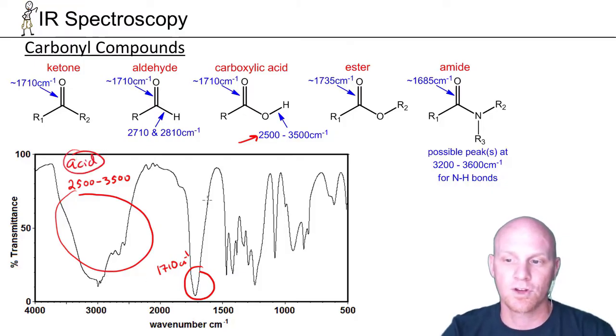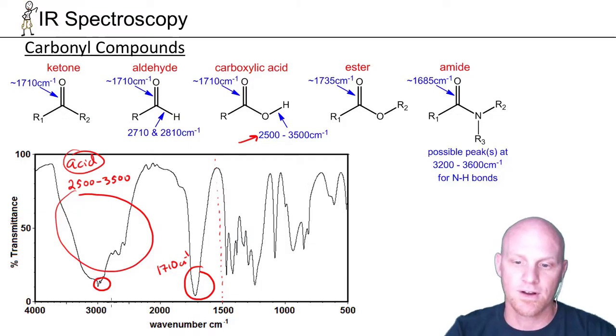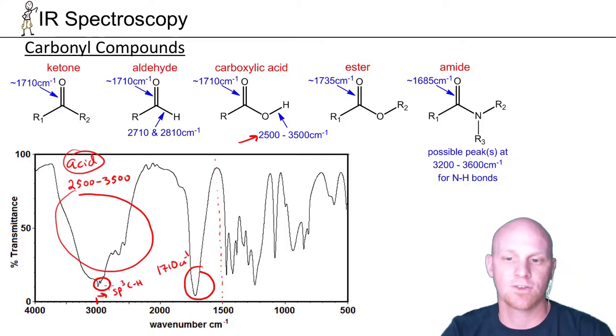One other signal you might have to identify outside the fingerprint region, this little guy. It's really subtle here, but it is on the right side of 3000. That is your SP3 C-H bonds coming right out of the OH, the acid OH stretch. Something else you're likely going to identify. I usually look around 3000, a little to the left, a little to the right. What's confusing is the OH stretch swallows up that whole region, and your SP3 C-H bond signals are coming right out of the middle of it.